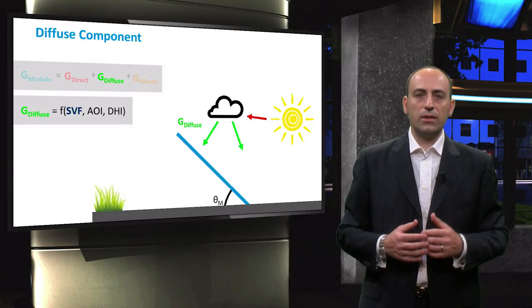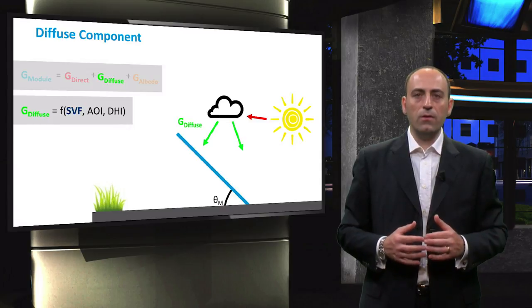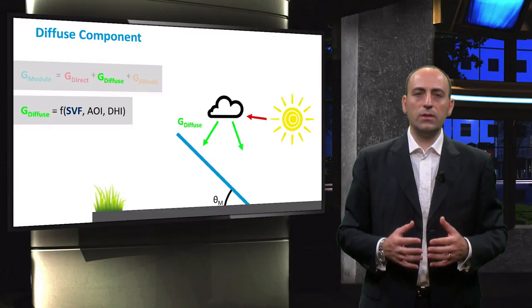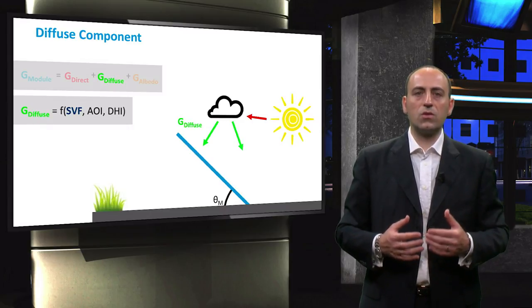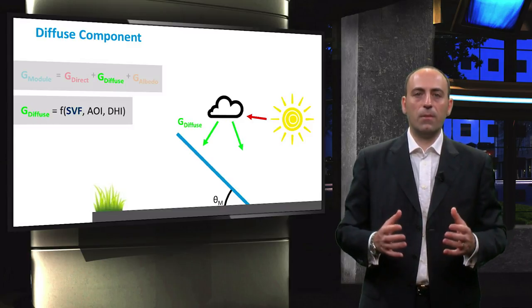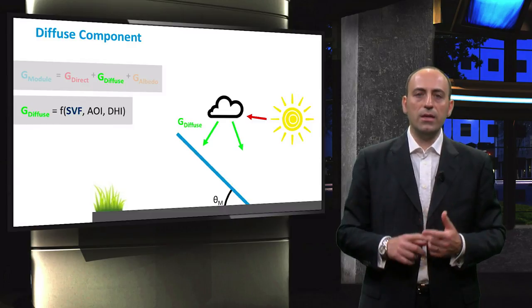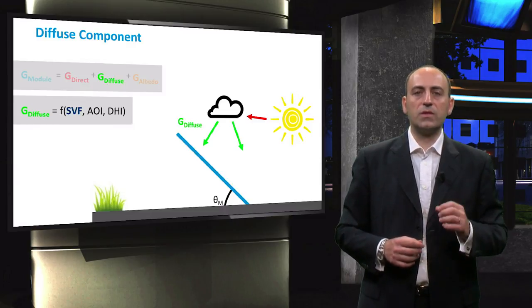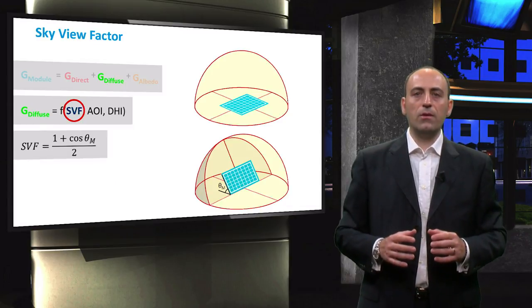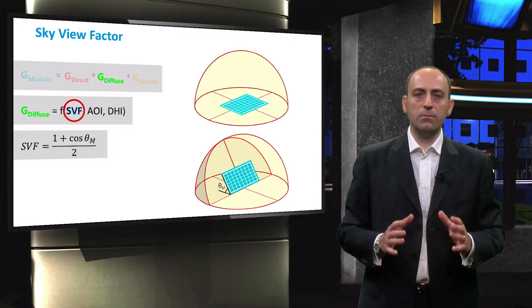The other component that contributes to the incident global irradiance is the diffuse component. There is not a single unique equation to obtain the diffuse irradiance. The calculation of this irradiance depends on the sky model that you want to use. Sky models differ in complexity, but in general they are a function of the diffuse horizontal irradiance, the angle of incidence, and most important, the so-called sky view factor, or SVF. This parameter only depends on the tilting of the module and it represents the portion of the sky seen by the module.